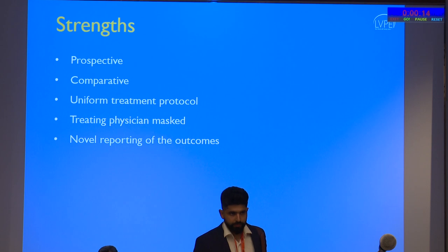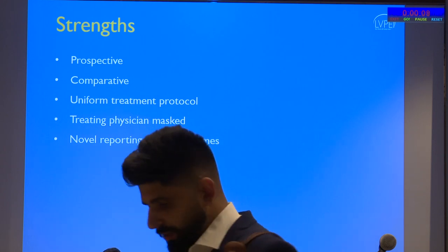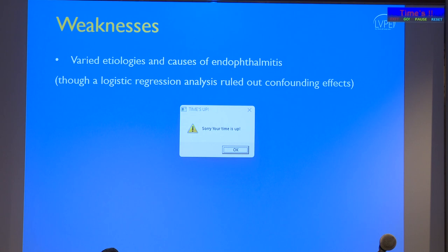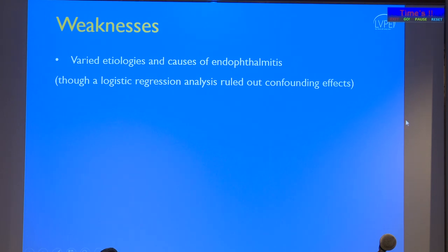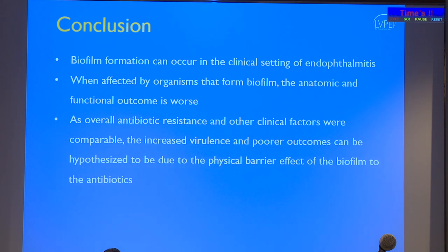The study's strengths include its prospective comparative design, uniform treatment protocol, masked treating physician, and novel reporting of outcomes. Weaknesses include varied etiologies and causes of endophthalmitis, though logistic regression was used specifically to iron out those differences. In conclusion, biofilm formation can occur in the clinical setting of endophthalmitis. When affected by biofilm-forming organisms, anatomic and functional outcomes are worse. Since antibiotic resistance and other clinical factors were comparable, the increased virulence and poor outcomes are hypothesized to be due to the physical barrier effect of the biofilm.